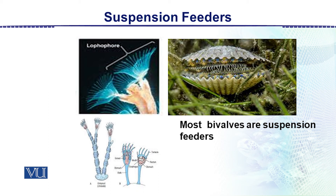Most bivalves, which belong to the phylum Mollusca, are also suspension feeders. They have two shells, and there are teeth-like structures that act as a sieve for food. Water moves in along with food particles, and then those particles are engulfed by the animal.